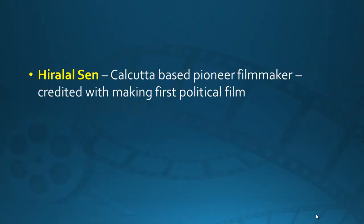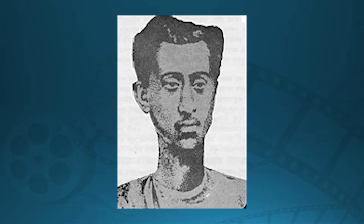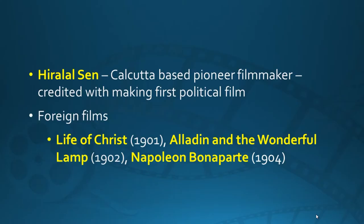Apart from that, there was another person called Hira Lal Sen, a Calcutta-based filmmaker. He is one of the pioneers in filmmaking, credited with making the first political film — not just capturing things as they were, but a film that would have impact on the political scenario of the country. Apart from local films, there were also foreign imports being shown to Indian audiences, such as The Life of Christ, Aladdin and the Wonderful Lamp, and Napoleon Bonaparte.